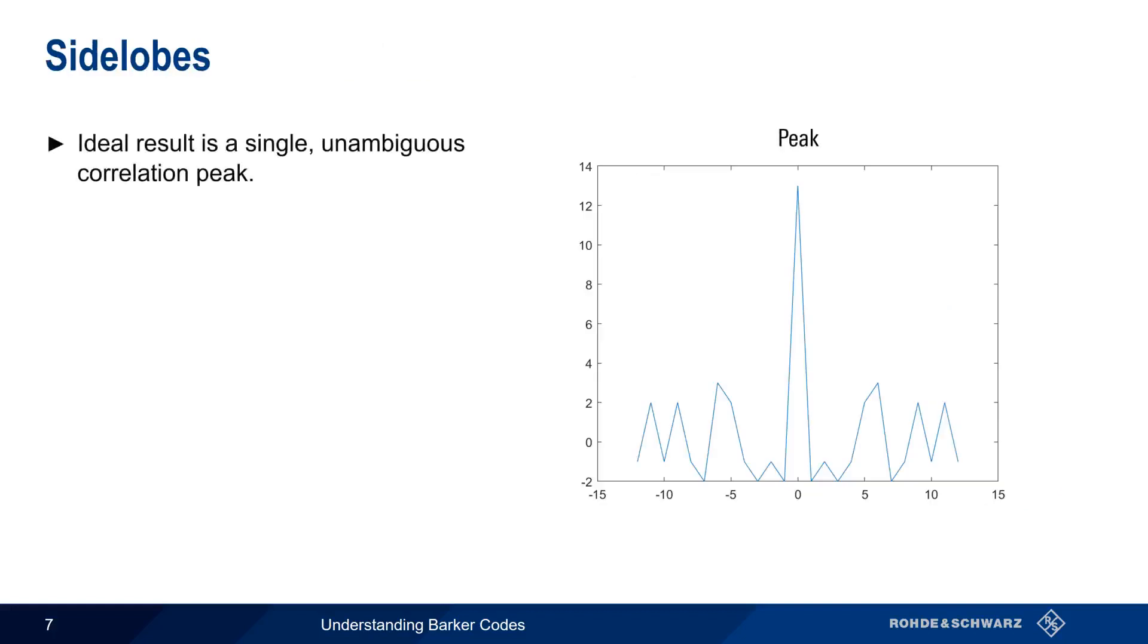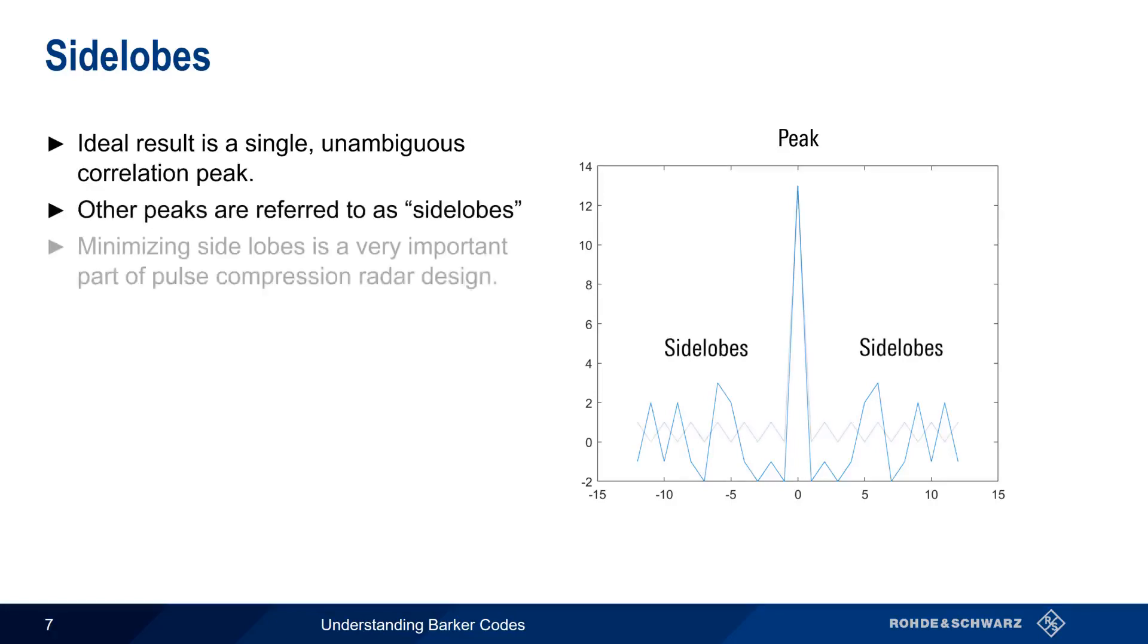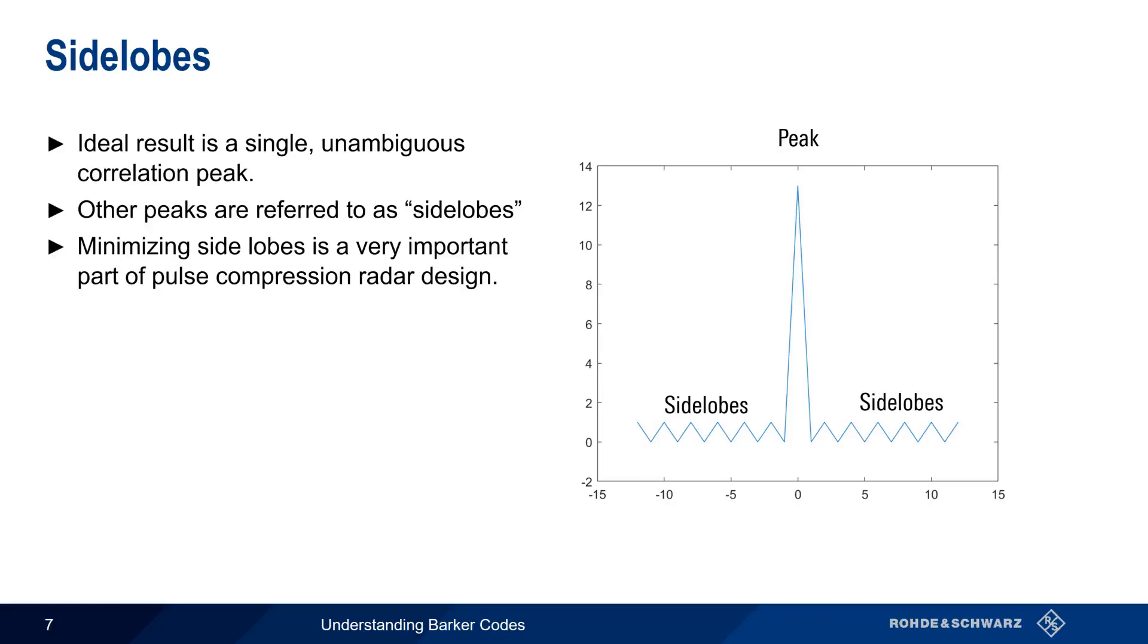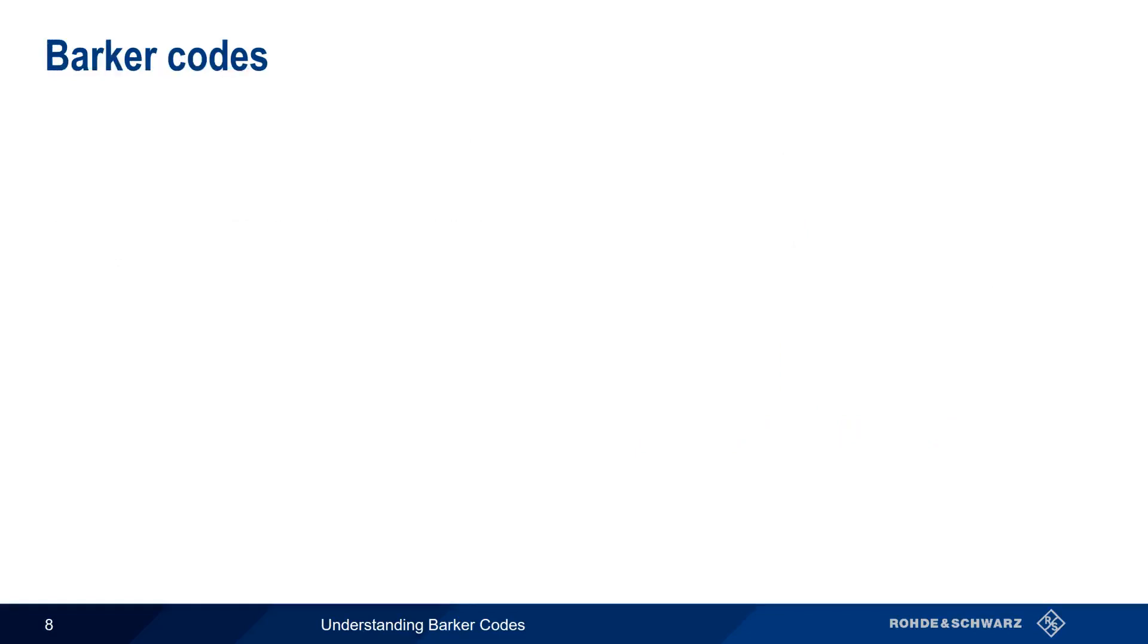Although our goal is a single unambiguous correlation peak that corresponds to target range or distance, you may have noticed that the correlation process produced smaller peaks as well. These peaks are called side lobes. Minimizing the level of these so-called time or range side lobes is a very important part of pulse compression radar design, because it makes it easier for us to find the true peak. It turns out that there are some phase sequences, or codes, that have very desirable correlation properties and produce very low side lobes. The most important of these are Barker codes, named after R. H. Barker, who first published a paper on them in 1953.